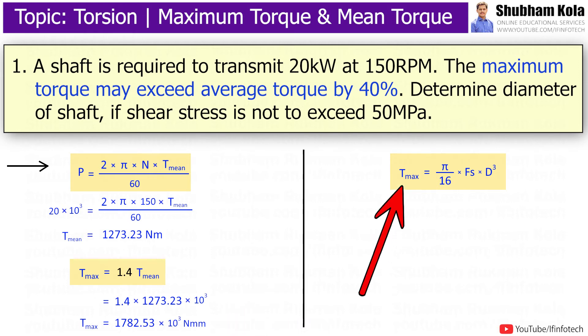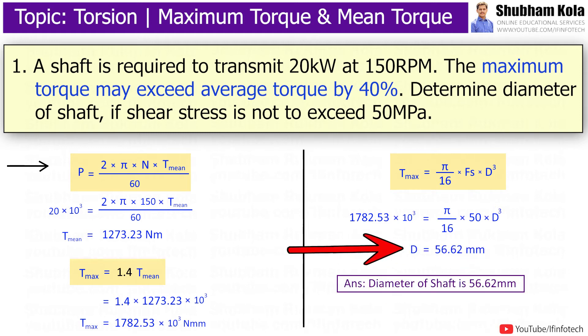And formula for T_max is π/16·fs·d³, where fs is permissible shear stress, which is 50 MPa. Therefore, diameter of shaft we got 56.62 mm.